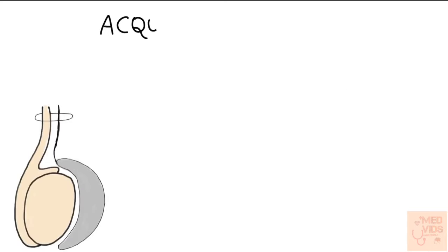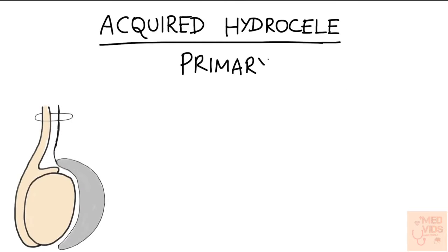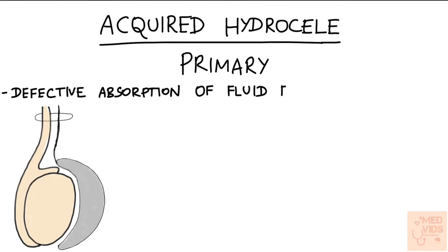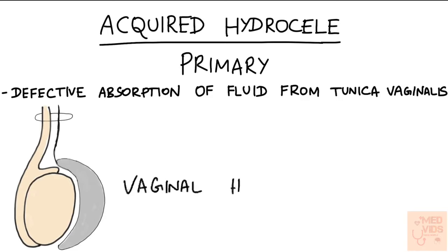First let's see about primary acquired hydrocele. Primary acquired hydrocele is due to a defect in the absorption of fluid from the tunica vaginalis. So the hydrocele sac is present around the testis. This is called vaginal hydrocele, where the fluid is collected inside the tunica vaginalis, and remember that it is the most common type of hydrocele.